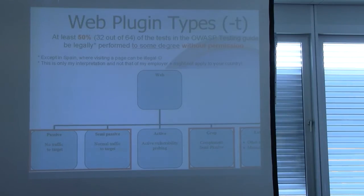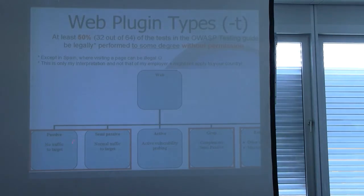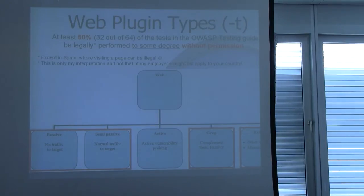OWTF tries to help the pen tester test security as fast as possible. One way to do this is to start testing before we have permission, by dividing tests into passive, semi-passive, active, and then external and grab. Passive testing essentially sends no traffic against the target — we test through third-party sites. Semi-passive sends traffic, but it looks normal, like a normal user visiting the site. Grab plugins do searches on HTTP transactions, and external plugins are meant to help the human exploit the problem.